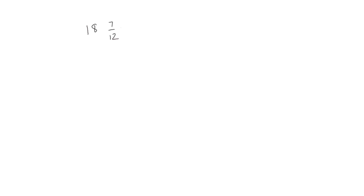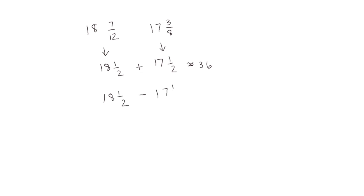Let's look at 18 and 7 twelfths and 17 and 3 eighths, and find the sum. 7 twelfths is pretty close to 6 twelfths which is 1 half, so we round to 18 and a half. 17 and 3 eighths is close to 17 and 4 eighths, so we round to 17 and a half. 18 plus 17 is 35, and 1 half plus 1 half is 1, so our estimate for the sum is 36. Using those same estimates for the difference: 1 half minus 1 half is 0, so our estimate for the difference would be 1.